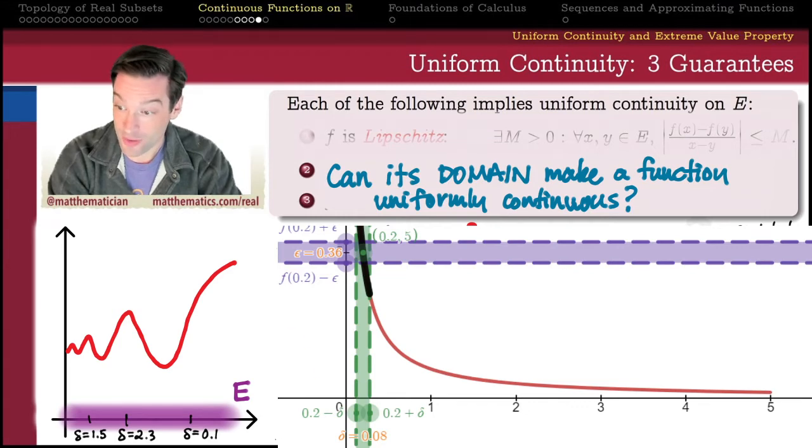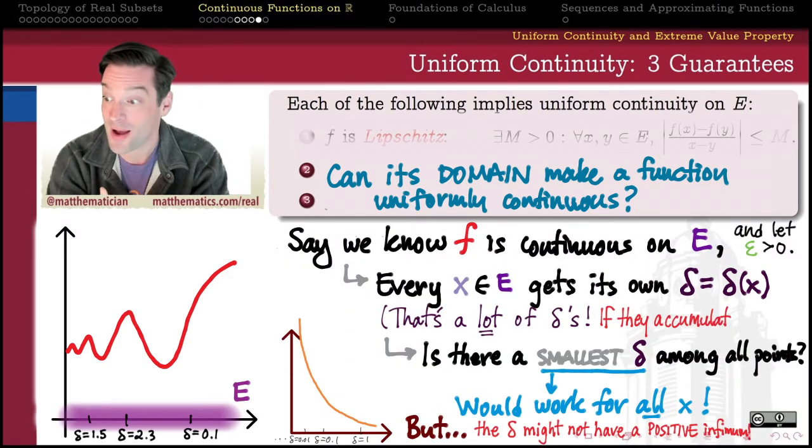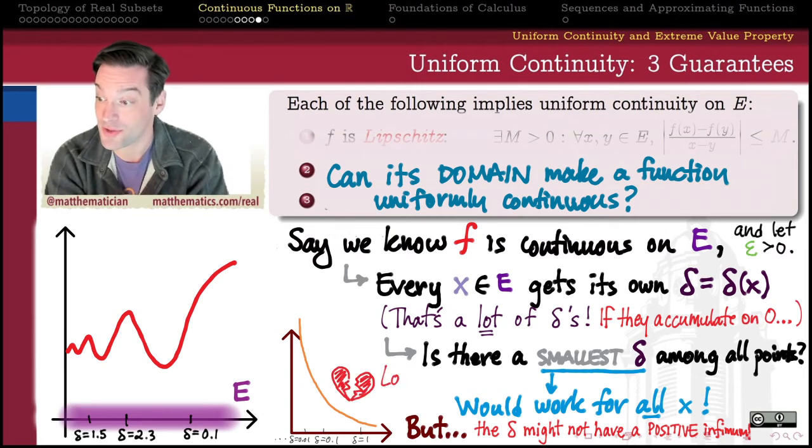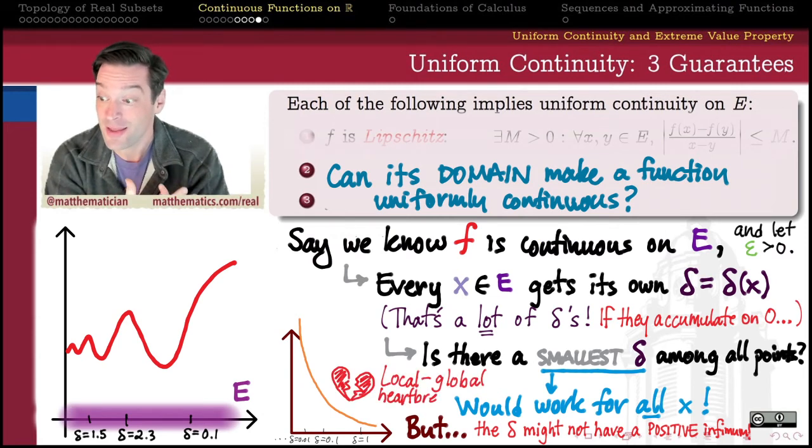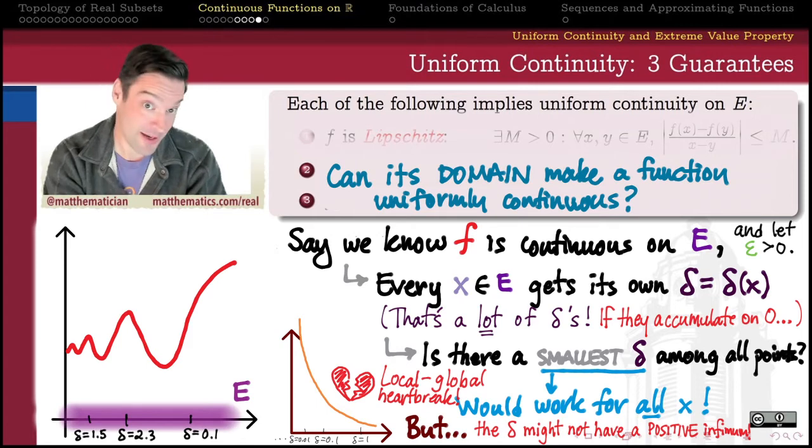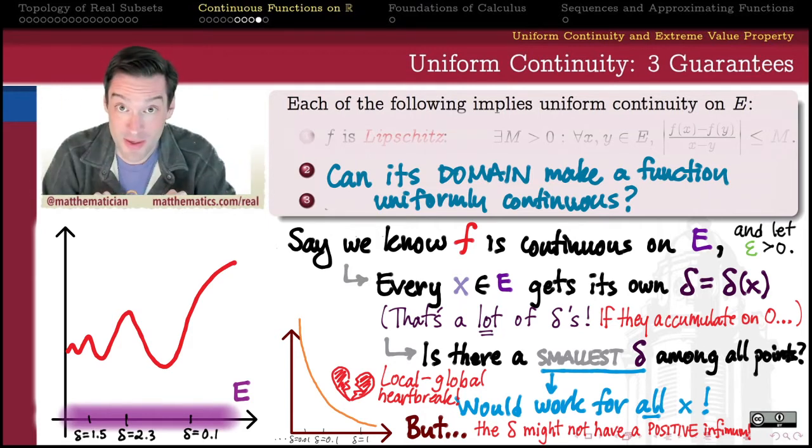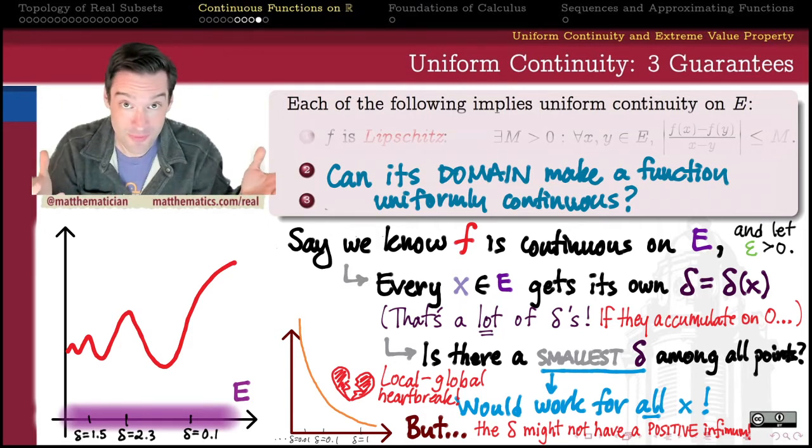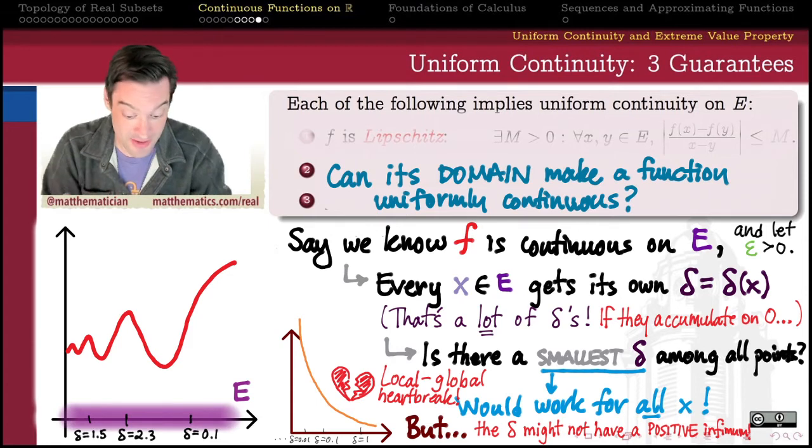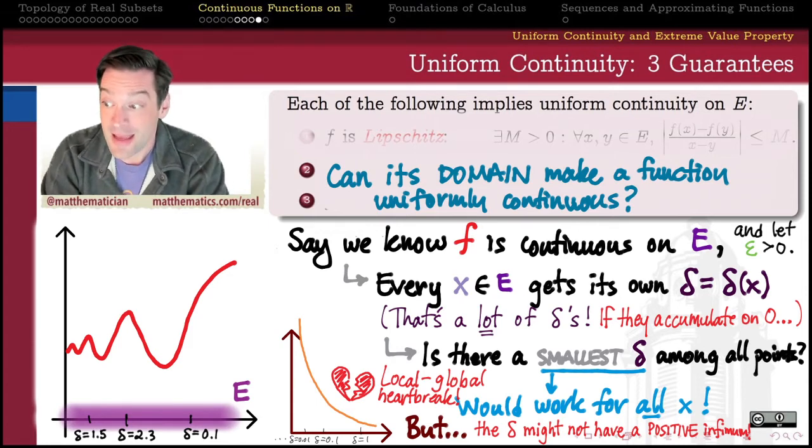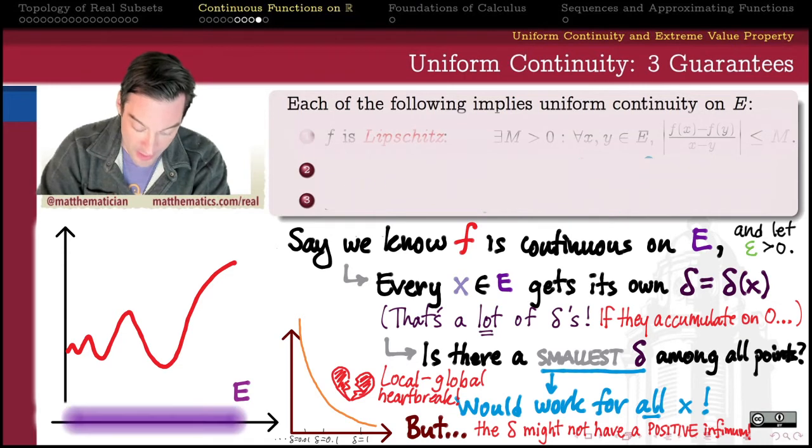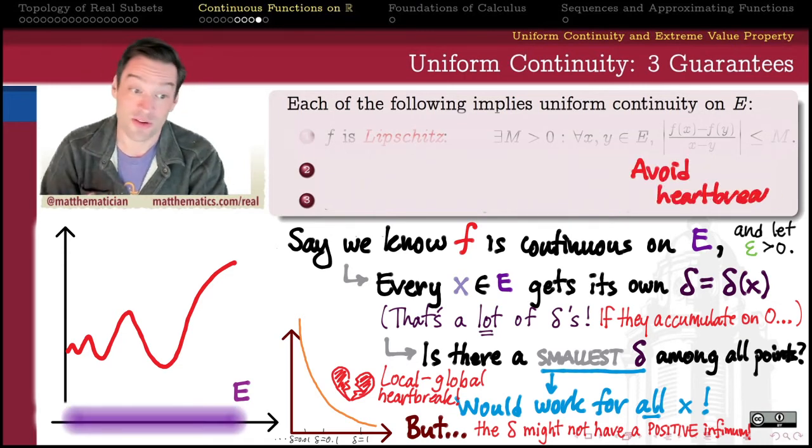And that's a problem. If the deltas don't have a positive infimum, if they crowd down to zero, if they accumulate on zero, then what we get is an instance of local to global heartbreak. If even though there is a positive delta that we can pick at every single x in my domain, there is no bottom, there is no pit other than zero. So the smallest delta that we can pick is zero, but we can't pick zero as a value of delta. It doesn't give us a reasonable notion of continuity.